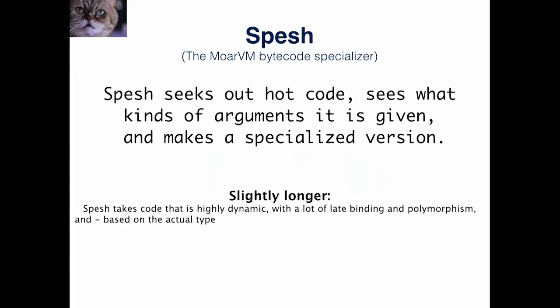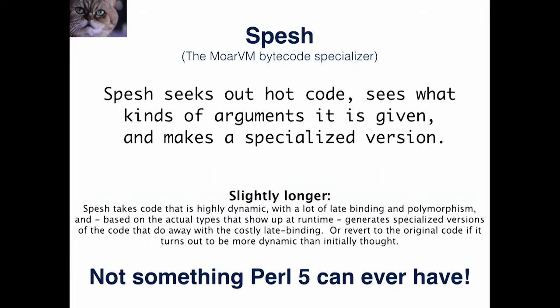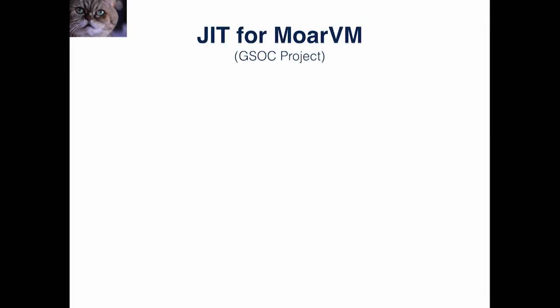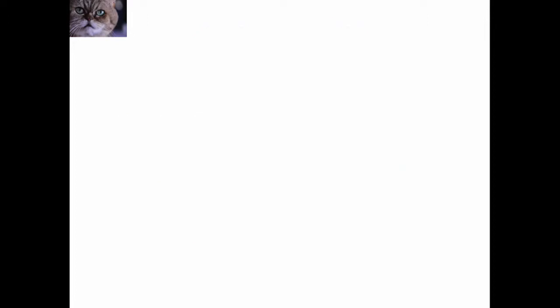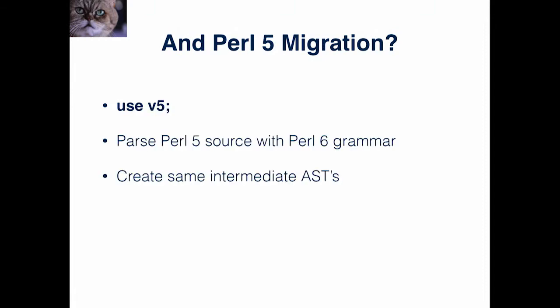I'm going to try to skip that faster. Anyway, this is something Perl 5 will never have. We have JIT for MoarVM — that's also very exciting. Think about this with Perl V5, which is the next one — Perl V migration. At the moment we have V5, which allows you to parse Perl 5 with a Perl 6 grammar.